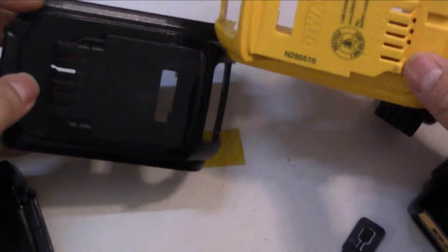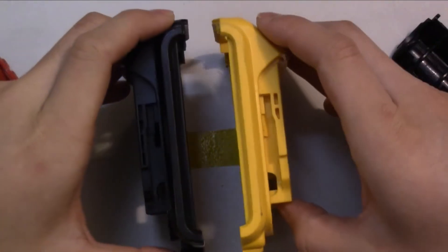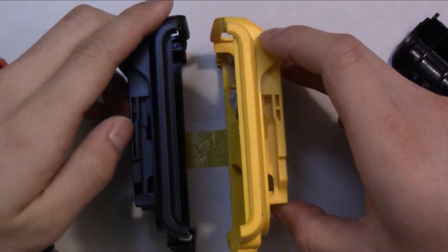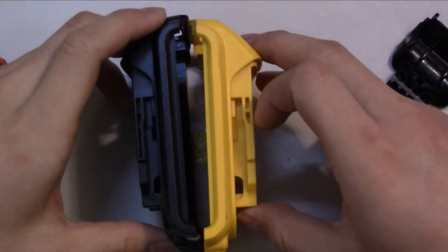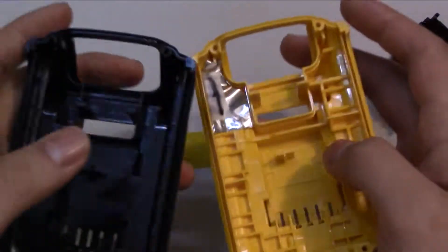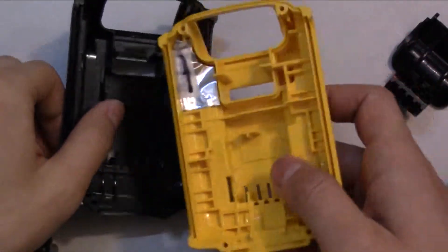On the back, there are some weight-saving measures here on the side. Cut-throughs in there to save some plastic, but the DeWalt is just all solid. And this does feel much lighter. This is definitely heavier.